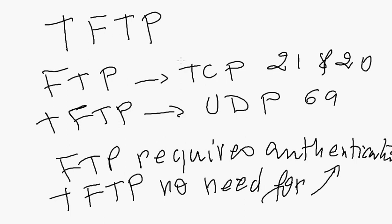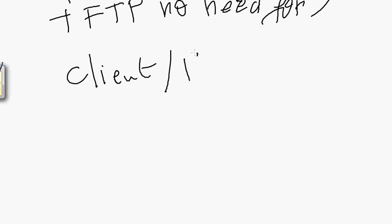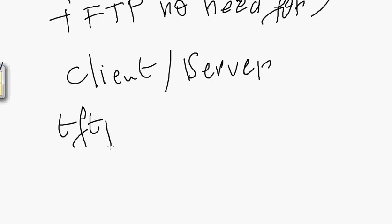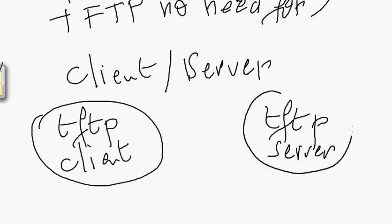Now I'm going to describe how things work. The TFTP protocol follows the client-server paradigm, which means that you have a TFTP client on one side and a TFTP server on the other side. The TFTP server is always listening at port 69 for any incoming requests from the TFTP client.